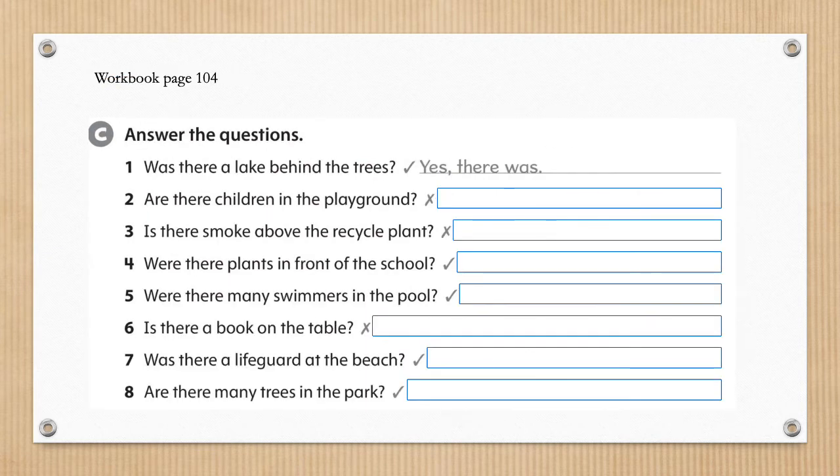Now onto activity C, which is in your workbook on page 104. These are answering the questions. There is a question and we need to answer it. If it has a tick, then we answer with yes. If there is a cross, we answer it with no. So, looking at number 1 as an example: was there a lake behind the trees? Yes, there was.